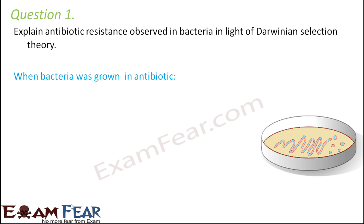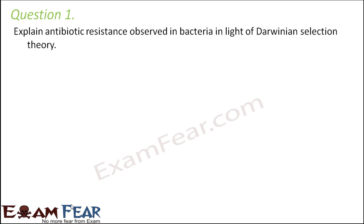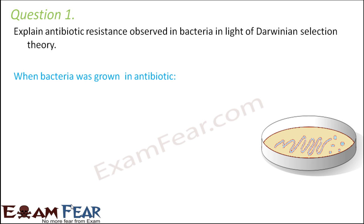In Darwinian theory, we saw that nature always selects the fittest and supports the fittest. Whichever trait gives a survival advantage, nature supports that. Now, when bacteria was grown in a medium with antibiotics, most of them died because antibiotics kill bacteria.